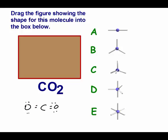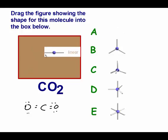For this structure, it doesn't matter that there are double bonds. There are two atoms coming off and no lone pairs, which means the shape is linear.